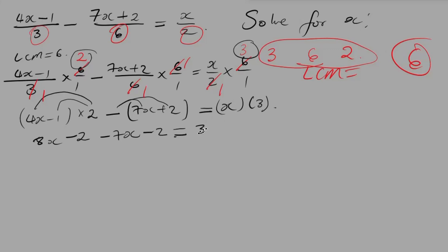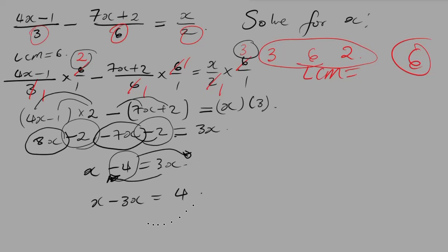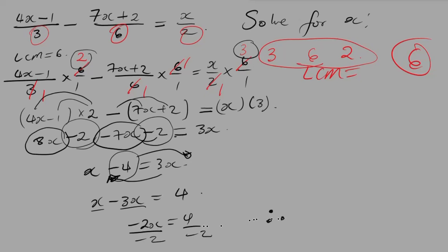Everything that is an unknown goes to one side, everything that is a known goes to the other side. 8x minus 7x gives x, and negative 2 minus 2 gives negative 4, so we have x minus 4 equals 3x. Bringing 3x to the left gives negative 3x, and sending negative 4 to the right gives positive 4. So x minus 3x is negative 2x equals 4. Dividing both sides by negative 2, x equals 4 divided by negative 2, which is negative 2.